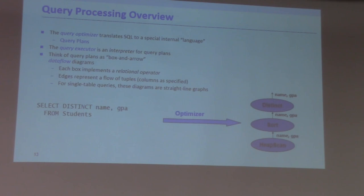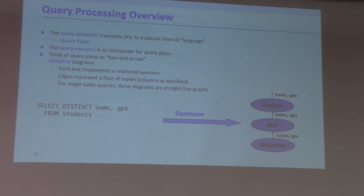Once you sort your data, you can easily remove duplicates by maintaining a running variable that stores the current value. Whenever the next value is different from the current value, you know that's a new distinct value. If the next value is the same, you just keep skipping it. That's how you eliminate duplicates by sorting.